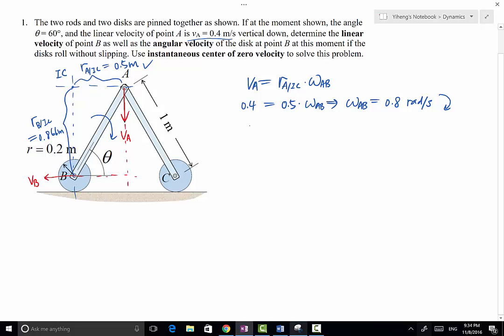So now because point B also belongs to the same rigid body, VB also equals RB relative to IC times omega AB, which equals 0.866 times 0.8, and that equals 0.693 meter per second. The direction is horizontal to the left, determined earlier, because the disk is rolling without slipping.